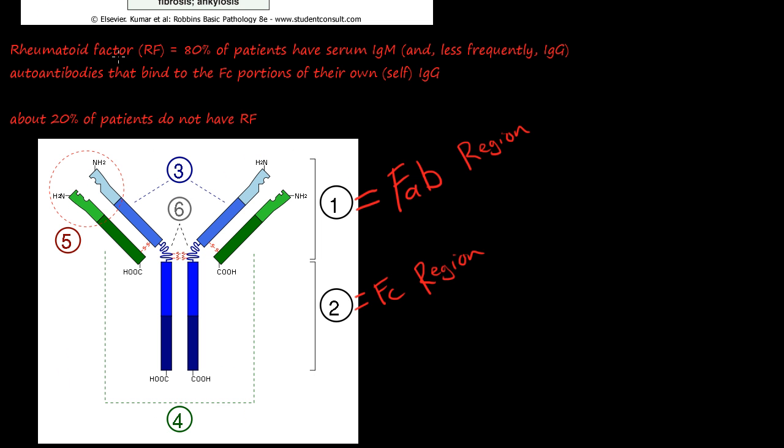Rheumatoid factor - if you've heard of RF, you can run a blood test to see if the patient has RF. 80% of patients have this RF that have rheumatoid arthritis. If you tested 10 patients, 8 would equal positive for RF. The crazy thing is, 2 people would be negative for RF.